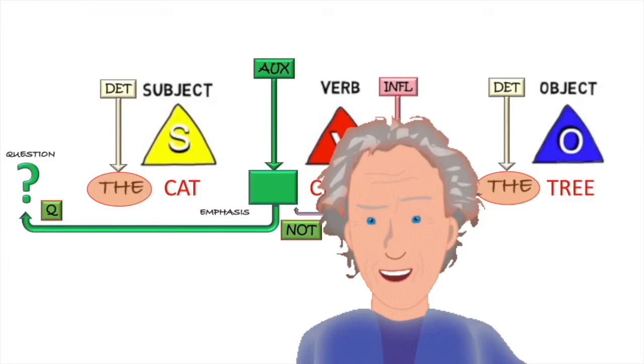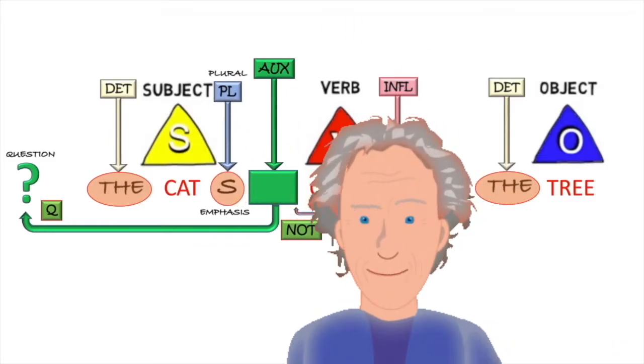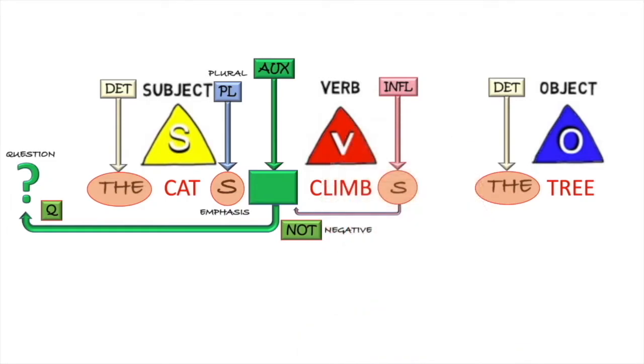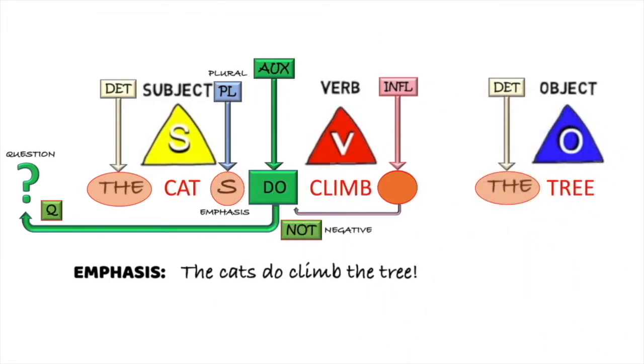We also learned that we can make the noun plural, so cat can become cats, more than one cat. When we do that, the verb changes. It doesn't need an S on the end anymore. So when we bring in the auxiliary do, we don't need to add the inflection on the main verb, because there is no inflection. We can leave do as it is, and show emphasis by saying the cats do climb the tree. That's right.